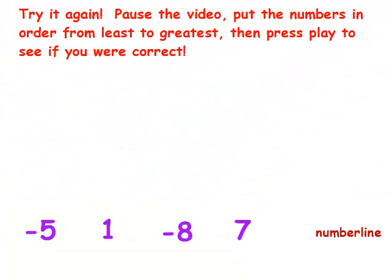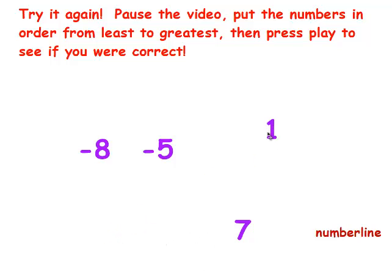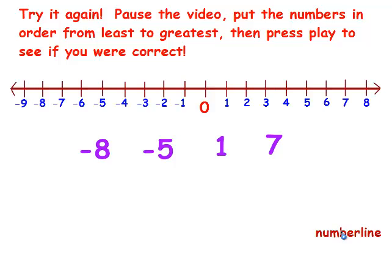We're going to try that one more time. Hit pause on the video and put these numbers in order, then play again and check it. The least number is the negative number with the largest digit behind it, so negative 8 is the smallest. After that is negative 5. Then the positive numbers: 1 is the smallest positive number and 7 is the largest. Let's check it — negative 8, negative 5, 1, and 7. They're in order from least to greatest.